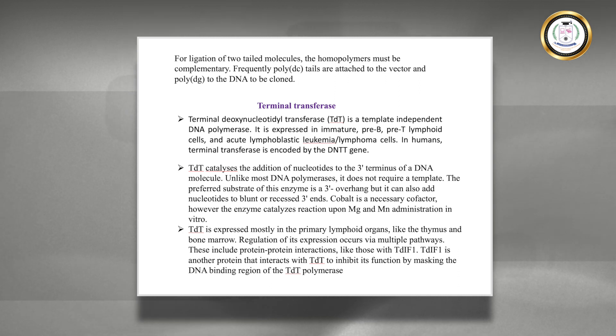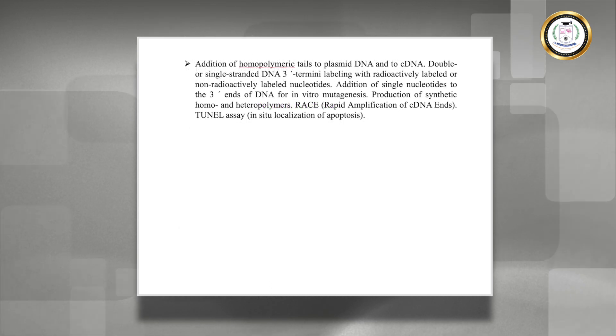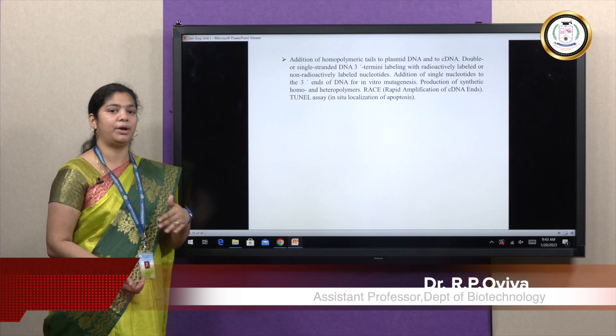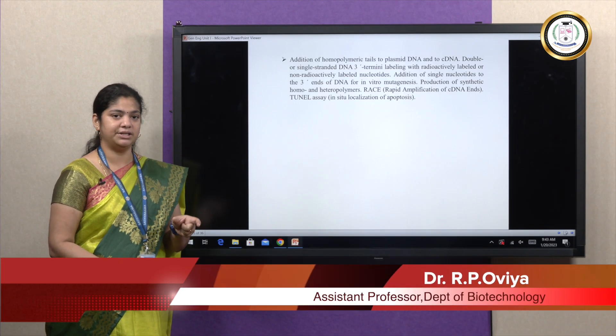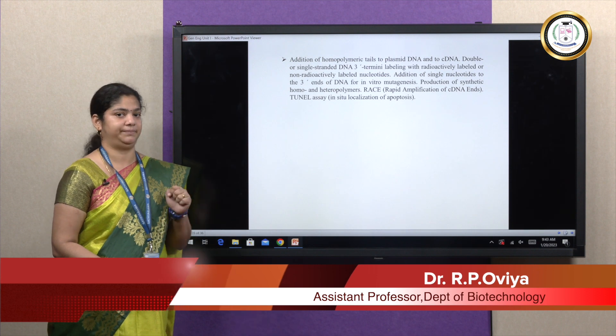In case of homopolymer tailing and terminal transferase, these are the enzymes that are used in making the cut, making the linker and adapter cut, and hence you can finally get the target gene sequence that can be cloned into a plasmid. Thank you.